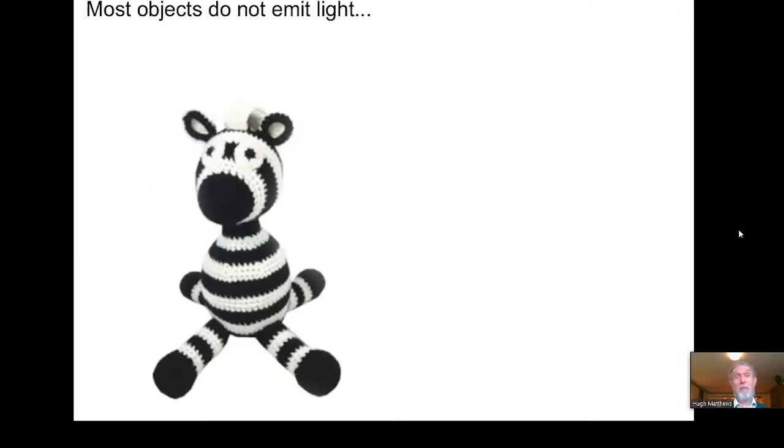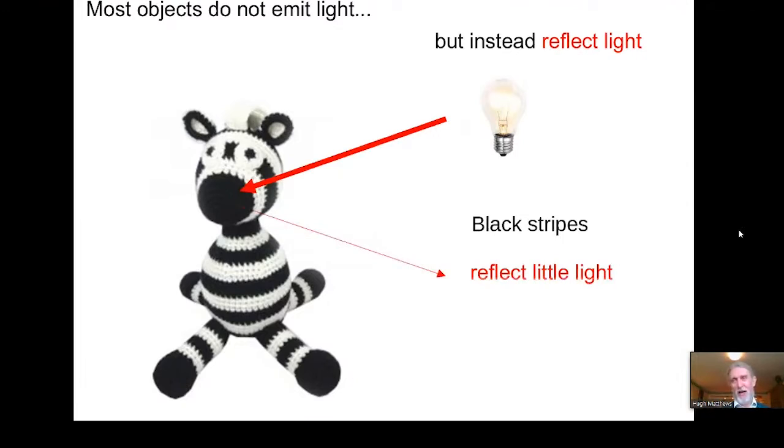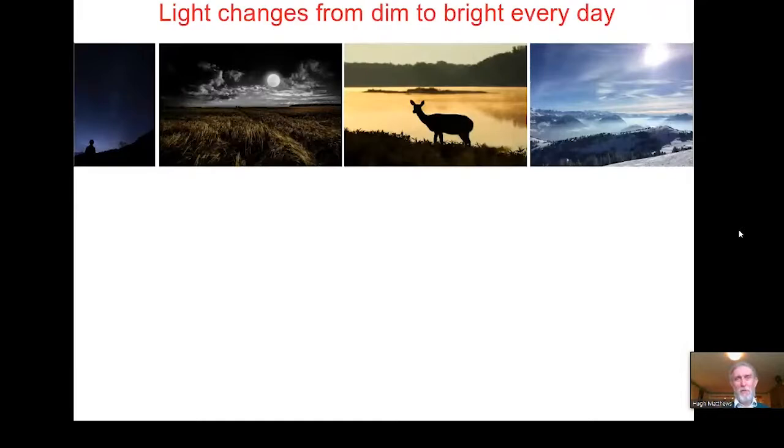Because most objects do not emit light, instead they reflect light from some external light source, such as my light bulb here. So when the light from the light source hits the object, it's reflected. And if it were reflected from the white stripe of my little knitted zebra, the white stripe would reflect a lot of light. And we'd like our visual system to adjudge that stripe as being a white one, with high reflectance. But if instead a ray of light from the light bulb hits a black stripe or the zebra's black nose, the black nose will reflect rather little light.